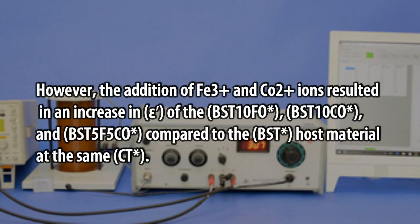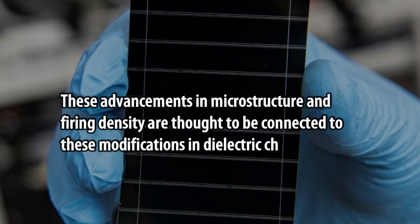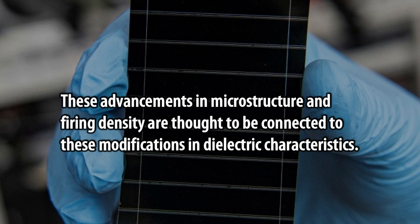However, the addition of Fe3+ and Co2+ resulted in an increase in epsilon of the BST10-Fe*, BST10-Co*, and BST5-Fe5-Co* compared to the BST* host material at the same CT*. These advancements in microstructure and firing density are thought to be connected to these modifications in dielectric characteristics.